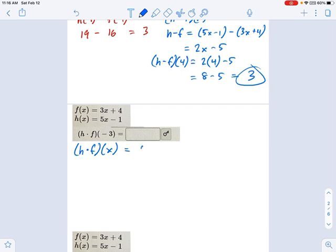So h is 5x minus 1. f is 3x plus 4. Just some simple foiling now. So that's going to be 15x squared plus 20x minus 3x minus 4.